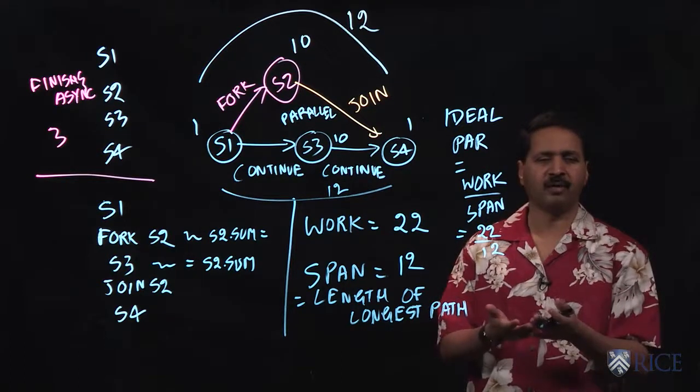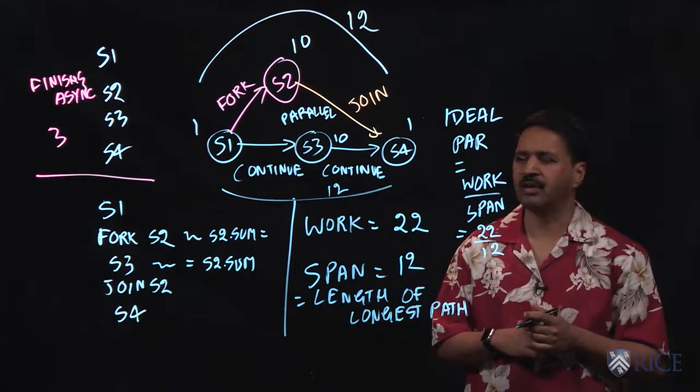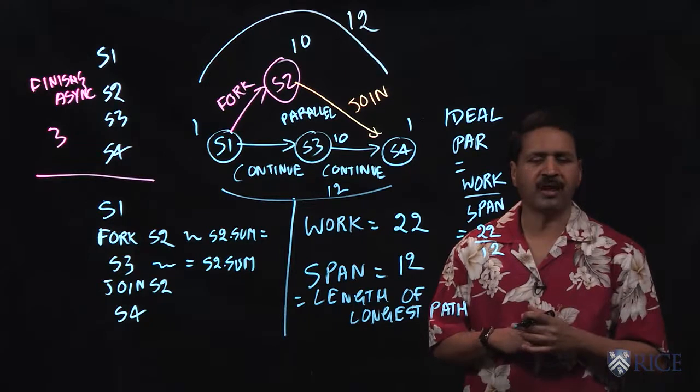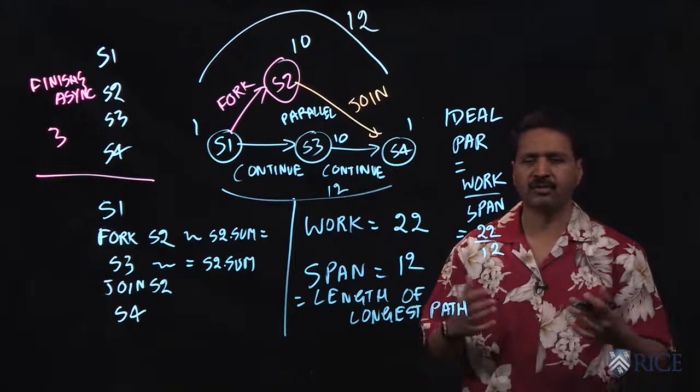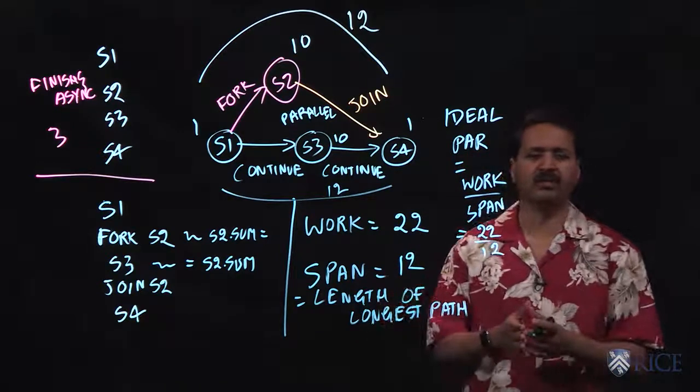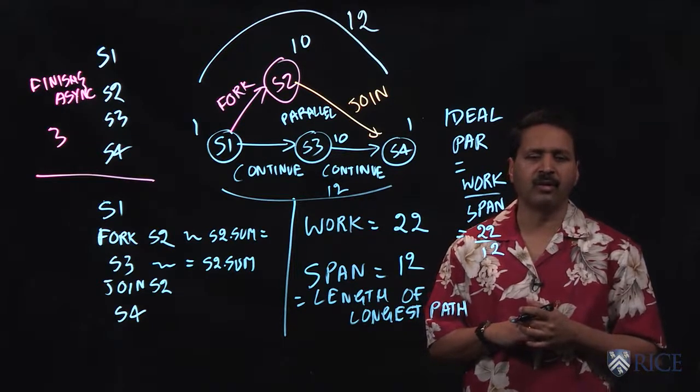For a sequential program, it would just be one because the span would be the same as the work. But what we will see is for a rich set of parallel algorithms, the ideal parallelism can be really large of the order of thousands or millions. And that allows us to take the same program and execute it on a wide range of different multi-core processors and other forms of parallel computers.